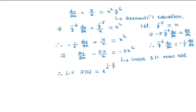This gives e to the power of minus 5 ln x, which is e to the power of ln x to the power minus 5, which equals x to the power minus 5. So the integrating factor is x to the power minus 5.